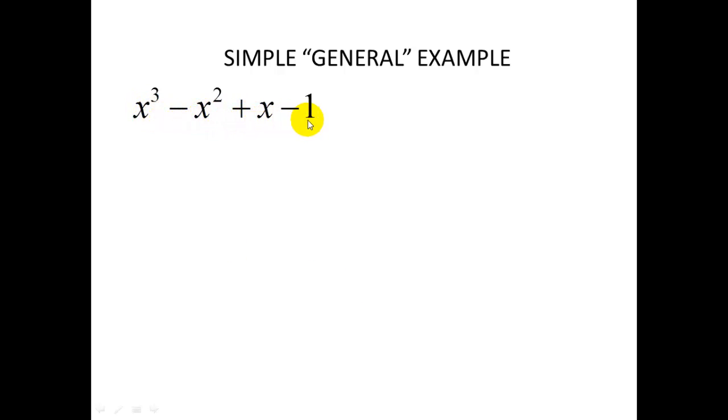Factorizing gives (x-1)(x²+1), and equating to zero gives roots x = 1, -i, or +i. I know the answer, but I'm not trying to show how to solve a cubic equation—I'm illustrating how to